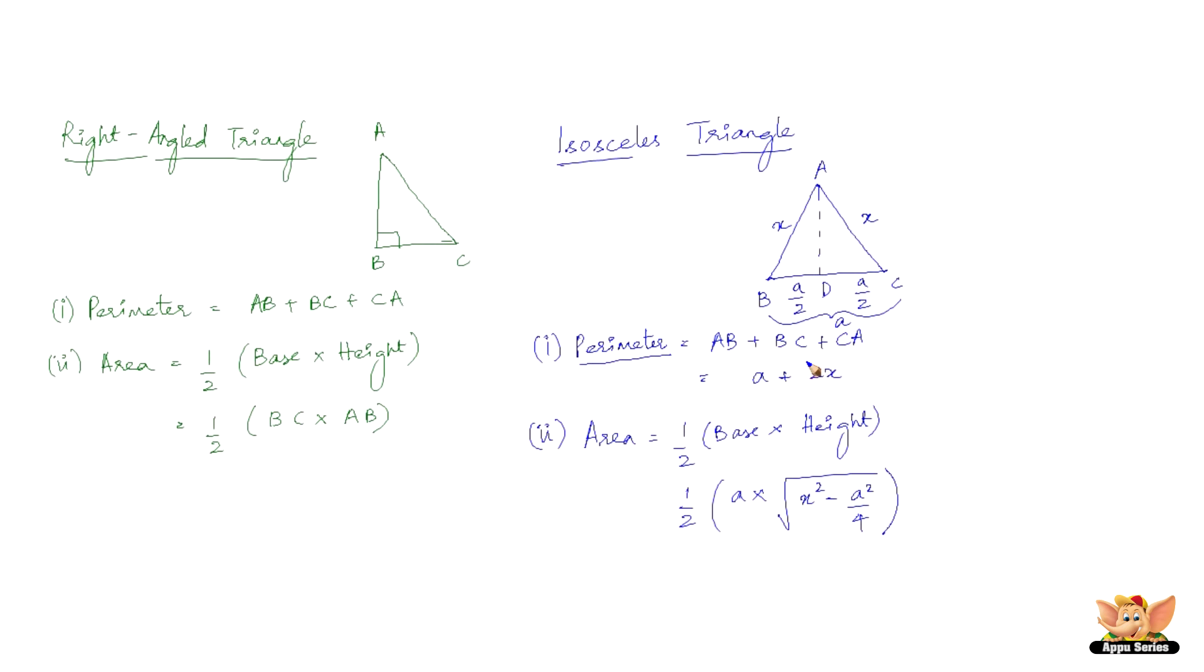Perimeter of this triangle is AB+BC+CA, obviously because it is the total length of the sides of the closed figure. So here we have AB+BC+CA. BC is a, and AB and CA are x and x, so x+x is 2x, plus a.